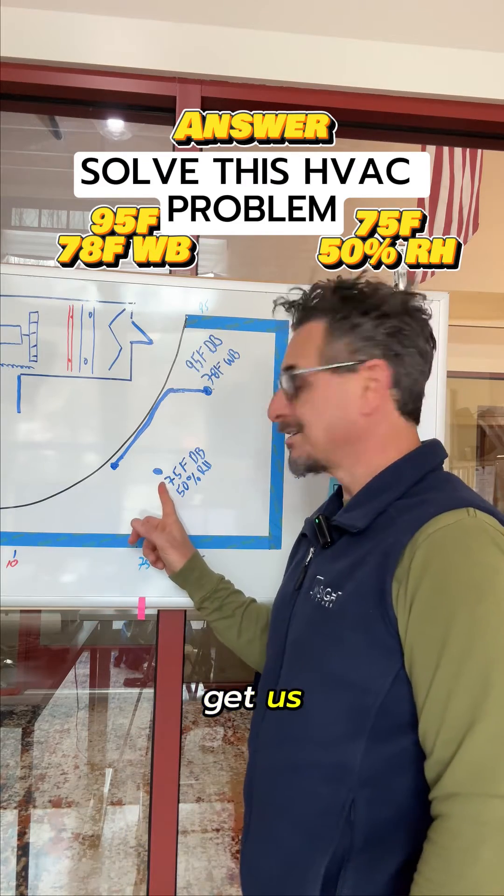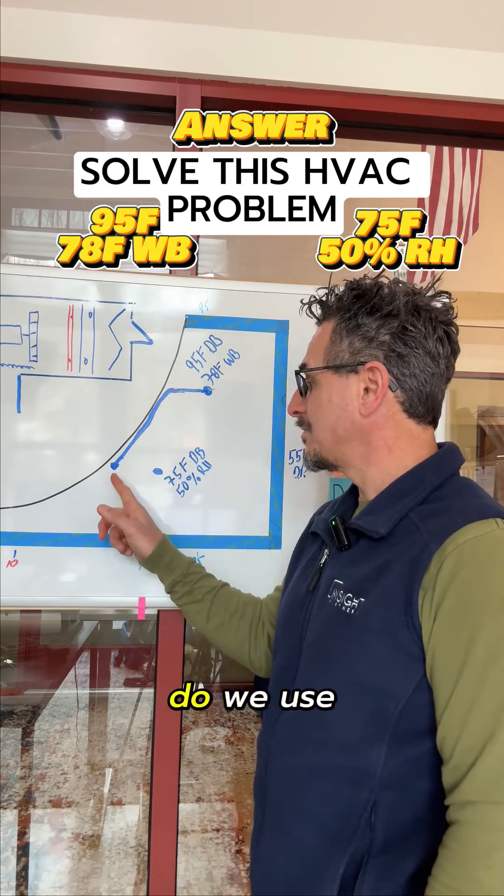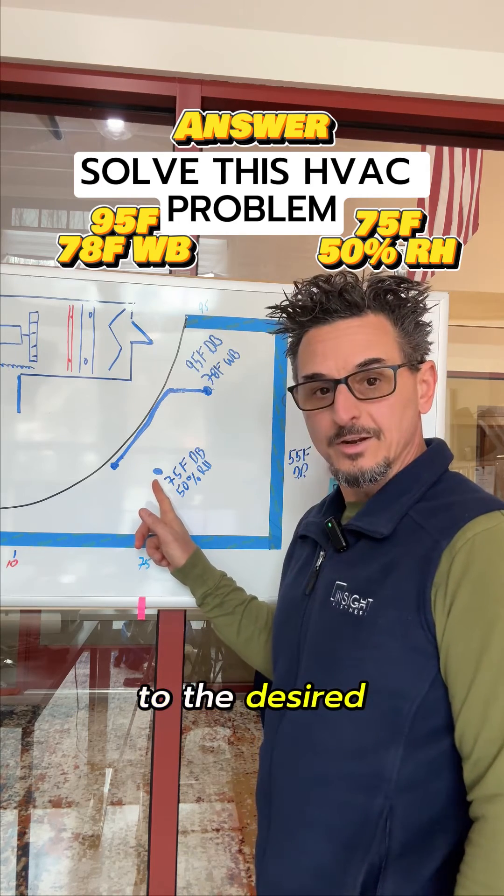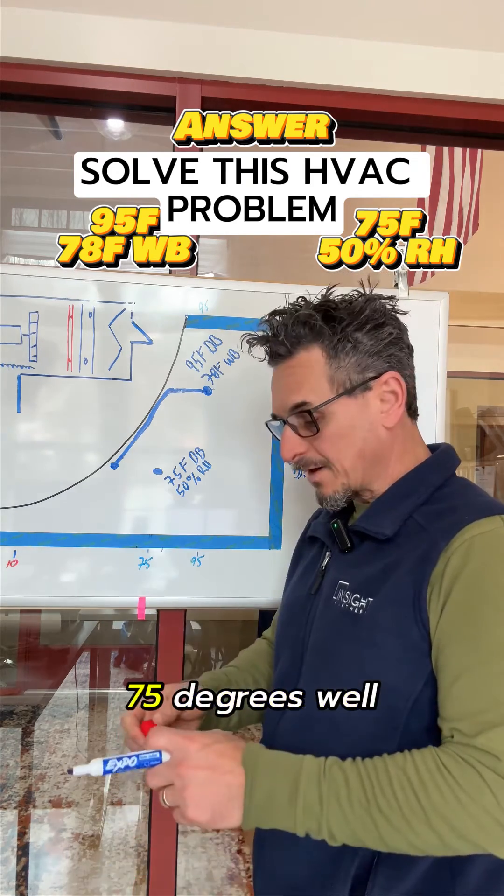Now that doesn't get us to here, does it? So what process do we use to get from the temperature leaving the coil to the desired leaving air temperature of 75 degrees?